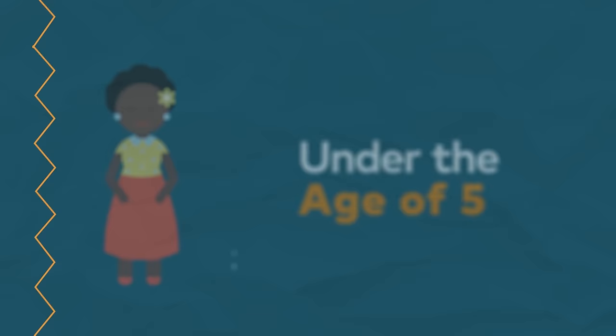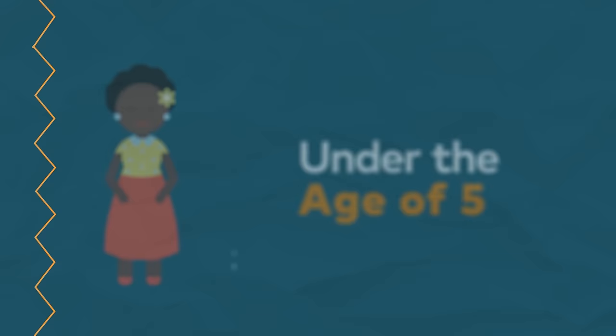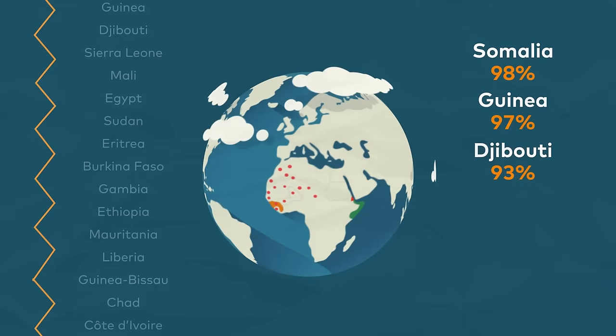FGM is practiced all over the world, but is predominant in 30 countries. In some of those countries, high prevalence rates mean that nearly all girls still experience FGM.